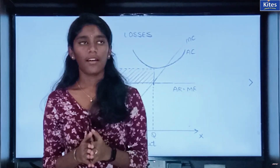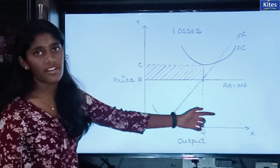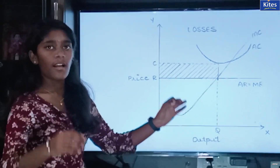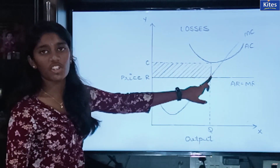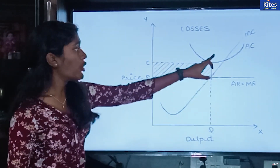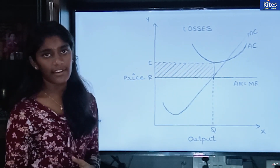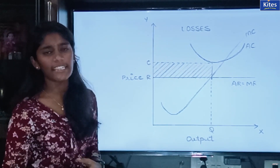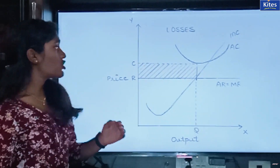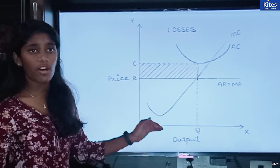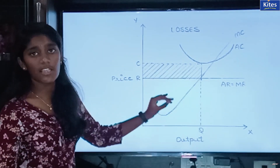The next case is about losses. Here the same thing again: this is your price, average revenue, and marginal revenue curves; this is your MC curve and AC curve. Here the MC equals MR at the equilibrium point. At the equilibrium point, your average cost is more than your average revenue. That means the cost which you are incurring is more and the revenue you are getting in return is less. So this is the condition of losses where you are spending more and getting less. The shaded part here represents the losses of the firm.